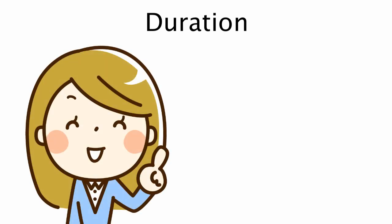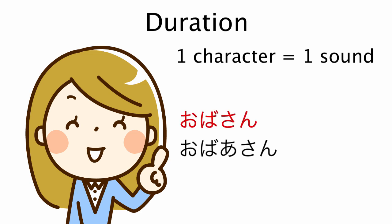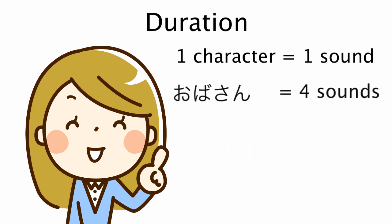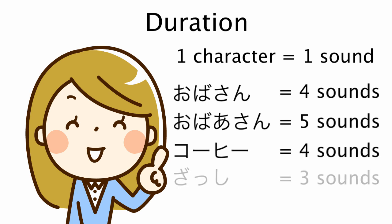Duration is the length of speech sounds. Speech sounds may be produced with a longer duration or a shorter duration. In languages like Japanese, a change in the duration of sounds may produce a change in meaning. Roughly speaking, in Japanese, one hiragana or katakana character represents one sound. For example, 'obasan' has four sounds and 'obaasan' has five sounds. If you mispronounce 'obaasan' in four sounds, it will probably sound similar to 'obasan.' You can learn more about this in the Duration video.